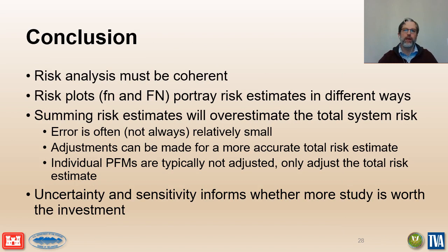Let's wrap up by summarizing a few key concepts. First, a risk analysis must be coherent, meaning the evidence, data, analysis, risk estimate, and recommendations must all tell a consistent story. Second, the two types of risk plots can portray risk in different ways, sometimes providing different insights on the nature of the risk. Third, the total risk estimate can be calculated in different ways depending on the accuracy needed and the impact that accuracy might have on a decision. Finally, uncertainty and sensitivity analysis is primarily used to support recommendations for further studies that could reduce uncertainty and increase confidence in decision making.